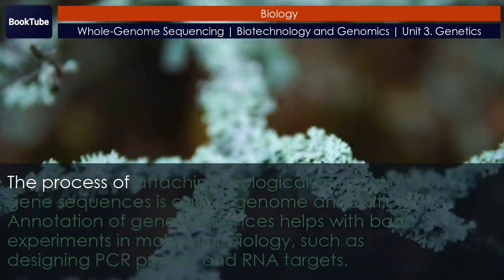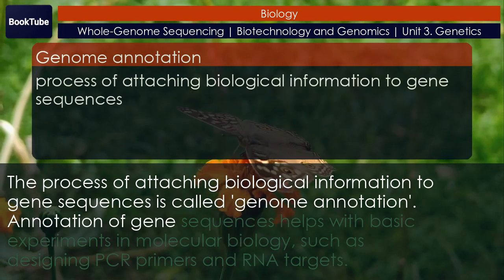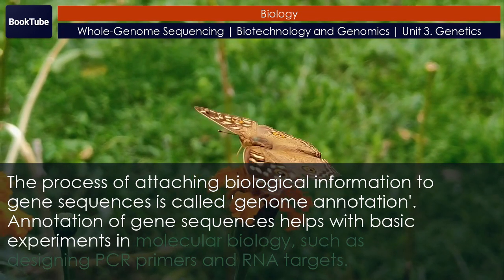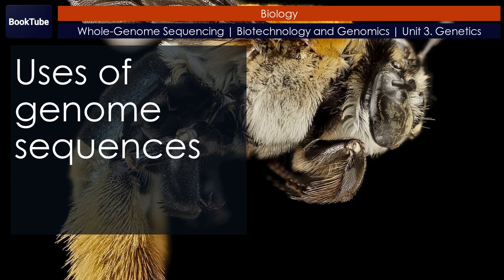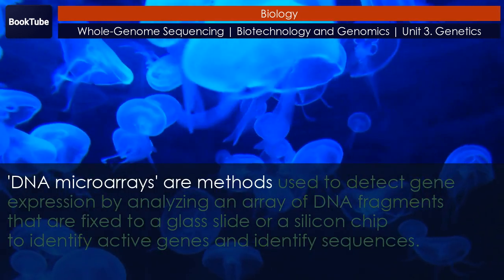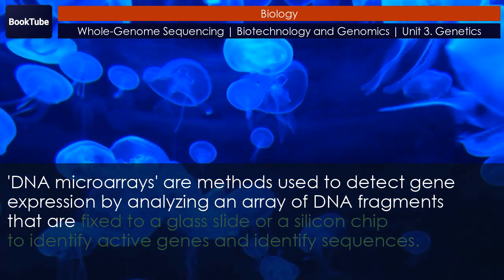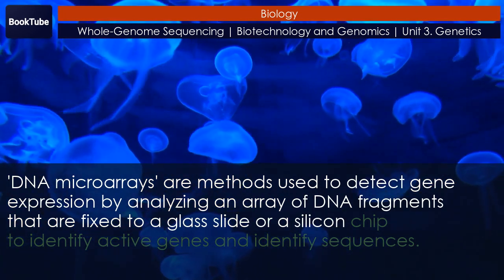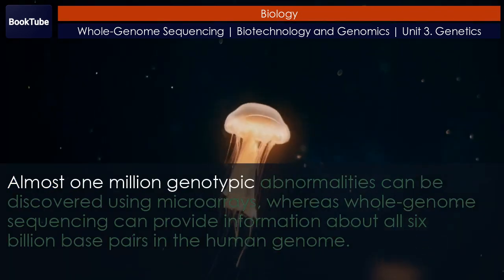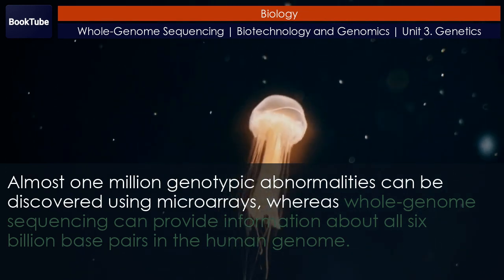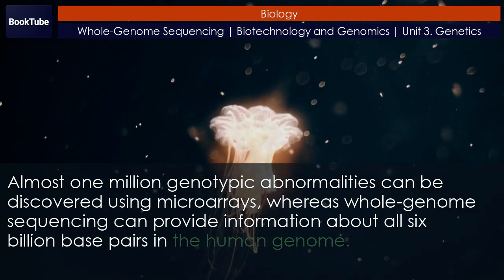The process of attaching biological information to gene sequences is called genome annotation. Annotation of gene sequences helps with basic experiments in molecular biology, such as designing PCR primers and RNA targets. DNA microarrays are methods used to detect gene expression by analyzing an array of DNA fragments fixed to a glass slide or a silicon chip to identify active genes and sequences. Almost one million genotypic abnormalities can be discovered using microarrays, whereas whole genome sequencing can provide information about all six billion base pairs in the human genome.